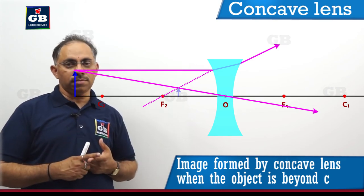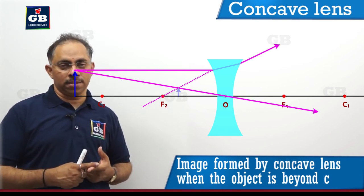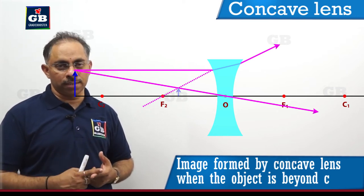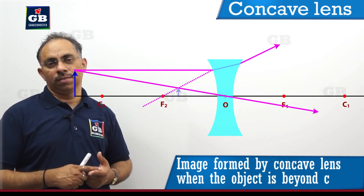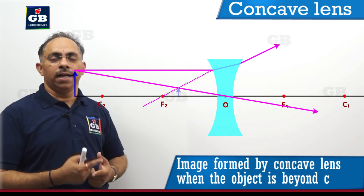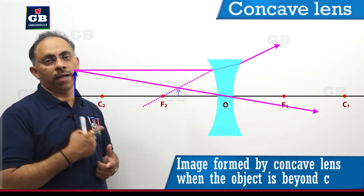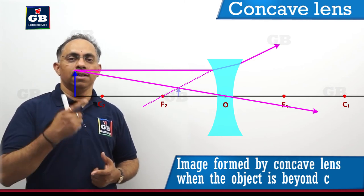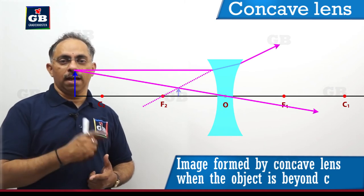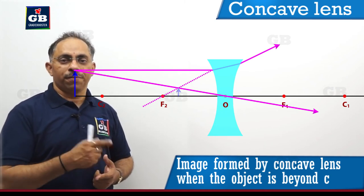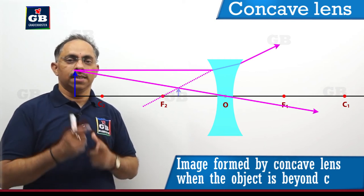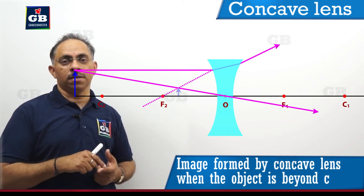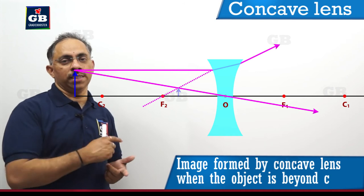These two rays intersect at one point, and this point of intersection of the two divergent rays gives the position of the image. Image IG is formed at the point where the ray through the optic center and the ray parallel to the principal axis — which after refraction appears to come from focus f2 of the concave lens — appear to meet. So image IG of object OJ is formed at that point.